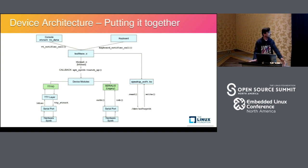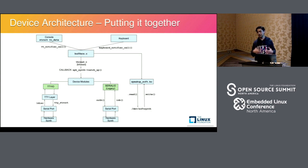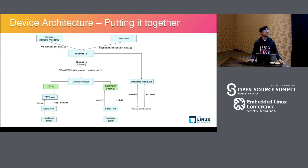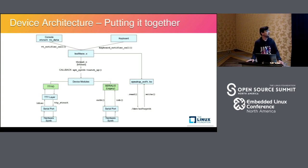There are two sources of input for SpeakUp: the console and the keyboard. Linux provides callbacks — VT notifier call and keyboard notifier call. When you implement these callbacks you capture data from these two different sources. With the keyboard notifier call you capture every keyboard input; it comes to you first and then you can decide what to do with it — whether to render on screen or take it as a command, which SpeakUp does. Then it puts it into a ring buffer implemented in a file called buffers.c, but there's only one ring buffer — so there is contention there.